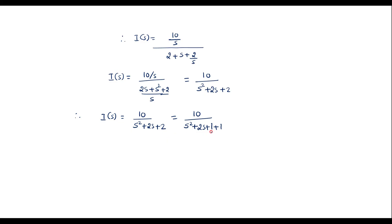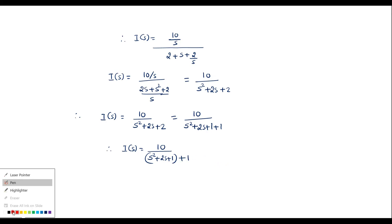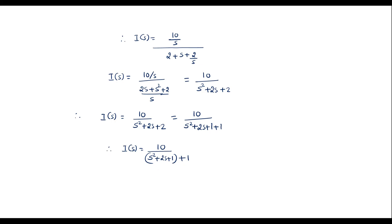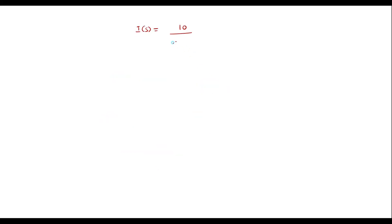Now I will rewrite the denominator s² + 2s + 2 by completing the square. Splitting the constant as 1 + 1, we get s² + 2s + 1 + 1, which equals (s + 1)² + 1. So I(s) = 10 / [(s + 1)² + 1].